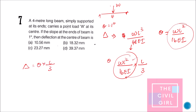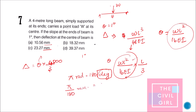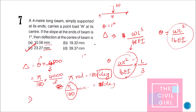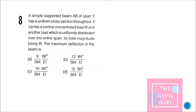L is 4 meters = 4000 mm. θ is given as 1 degree, which must be converted: 1° = π/180 radians. Substituting: δ = (π/180) × (4000/3) = 23.27 mm. The answer is 23.27 millimeters.